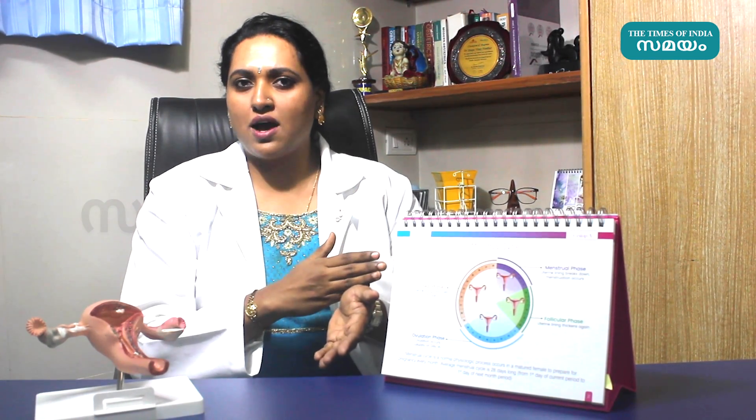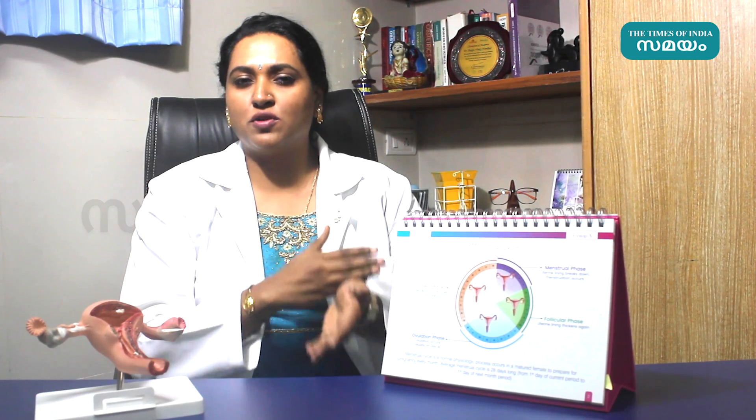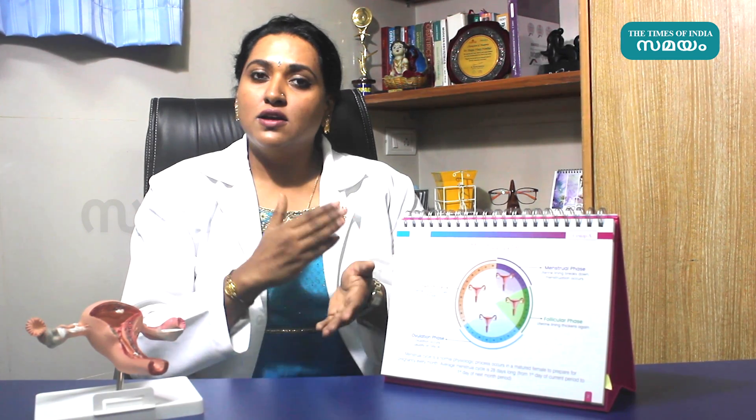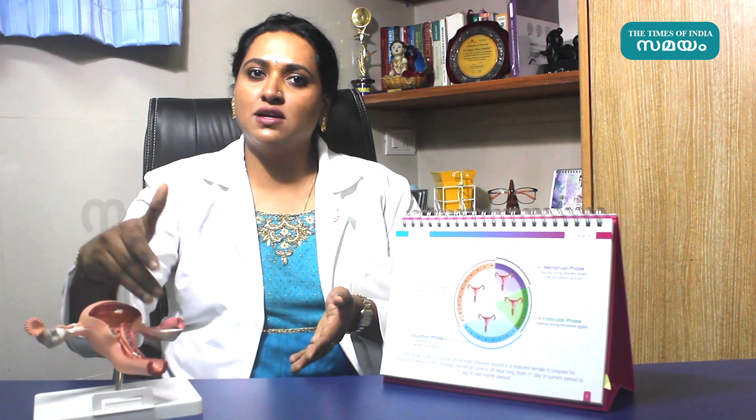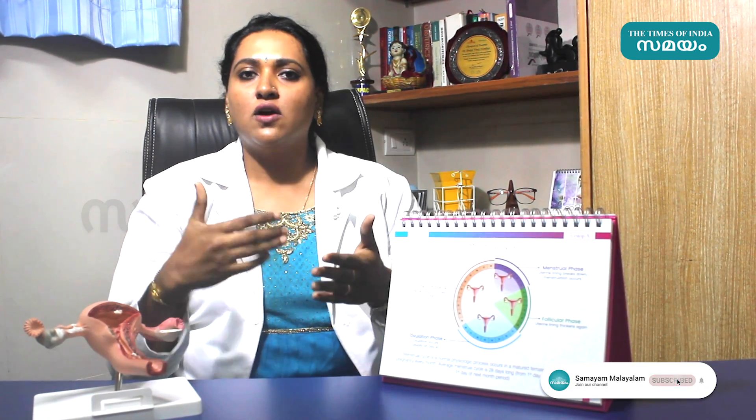When a couple tries to achieve pregnancy, this is the normal period window. In the normal ovulation stage, a few hormones are released. They prepare the endometrium — the uterine lining — which is prepared for either the next period or a pregnancy.